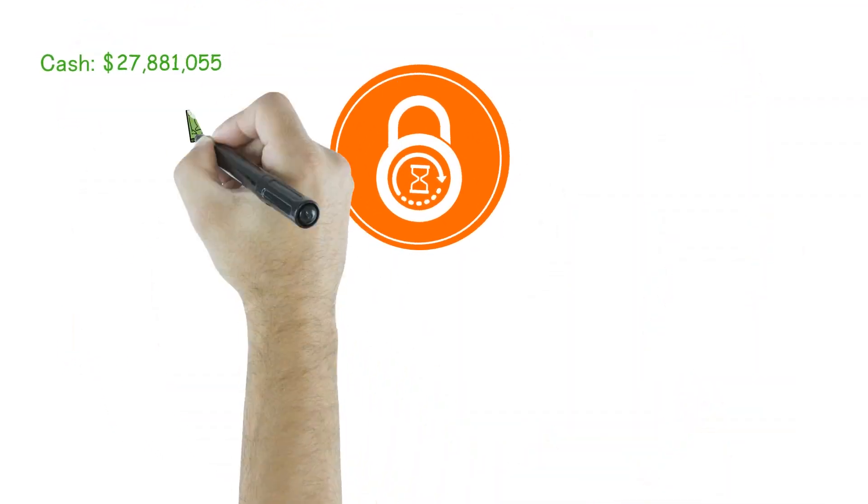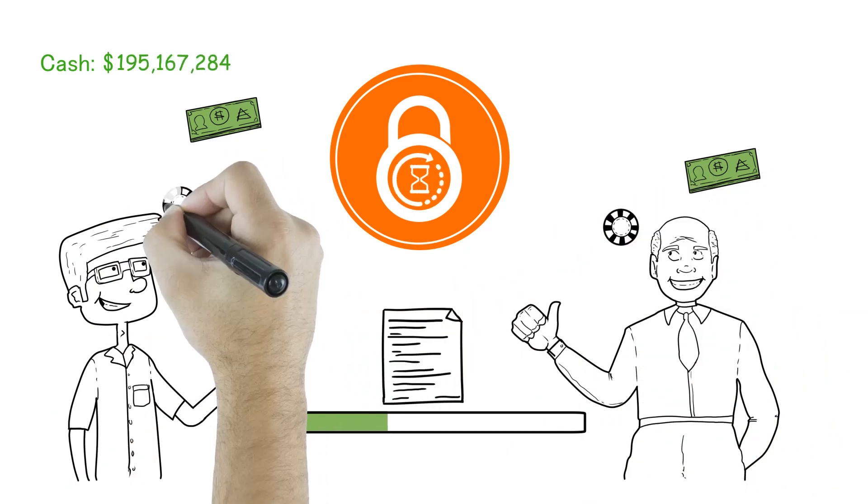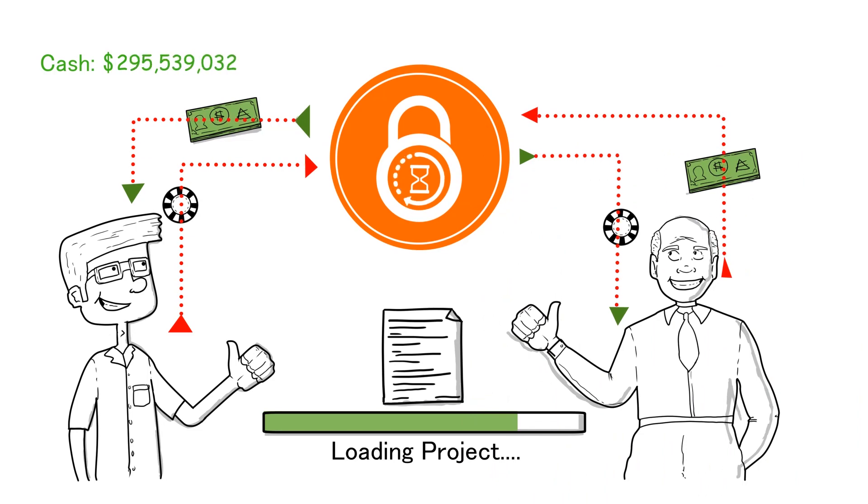Loligo is the unique blockchain solution to ensure efficient conduct of ICOs under the control of the participants, while providing a simple interface accessible to everyone.